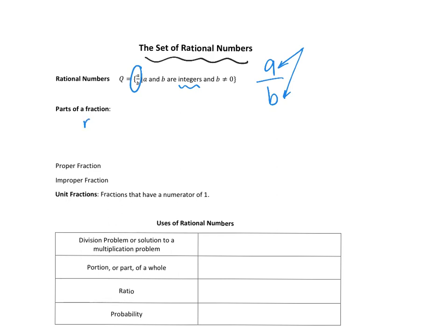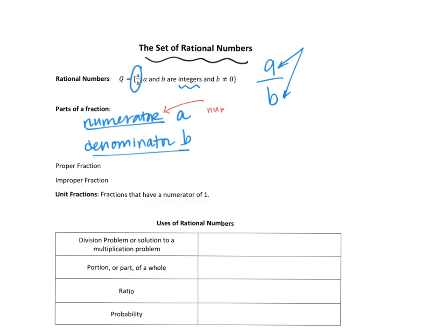When we talk about the fraction a over b, a is in the numerator — the top — and b is in the denominator — the bottom. The word 'numerator' comes from the Latin word for 'numbered,' meaning how many, and the word 'denominator' comes from the Latin for 'namer.'